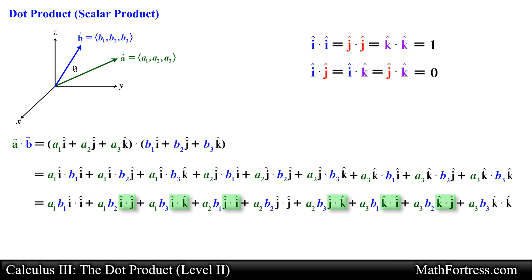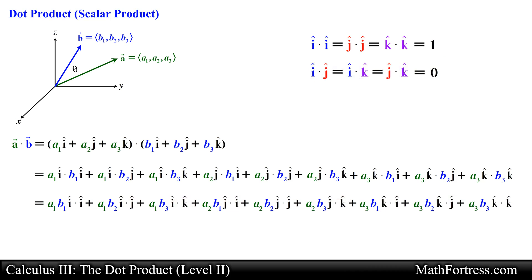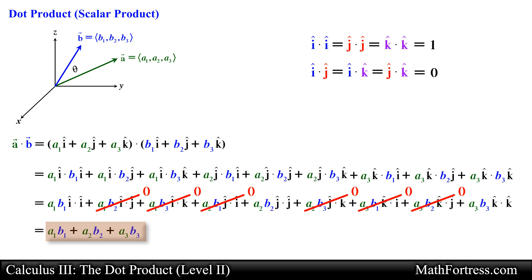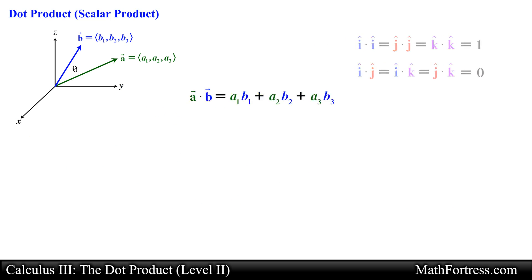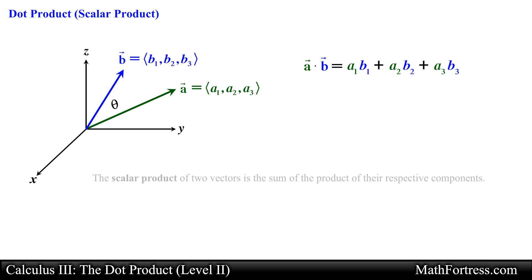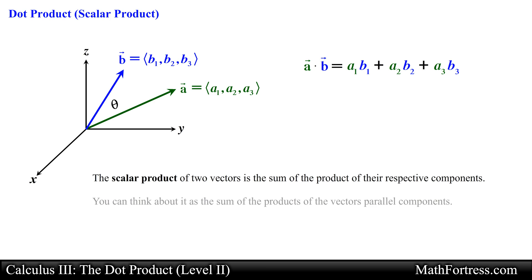Six of the nine terms are equal to zero since the unit vectors are orthogonal to one another. The three surviving terms give the final expression for the dot product of two vectors in terms of their components. From this expression we see that the scalar product is the sum of the products of the respective components — equivalently, the sum of the products of the vectors' parallel components.